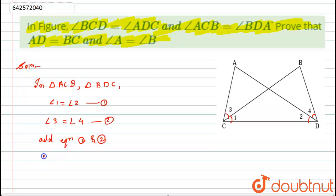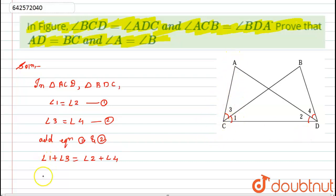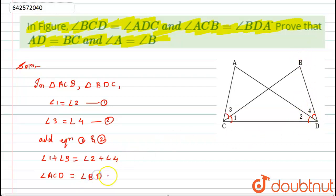Adding equations 1 and 2, I get angle 1 plus angle 3 is equal to angle 2 plus angle 4. Now if I look at the figure, angle 1 plus angle 3 is nothing but angle ACD, and angle 2 plus angle 4 is nothing but angle BDC. So angle ACD is equal to angle BDC.